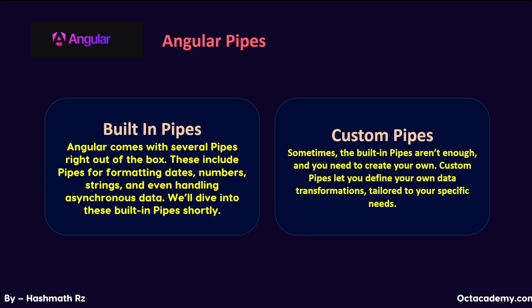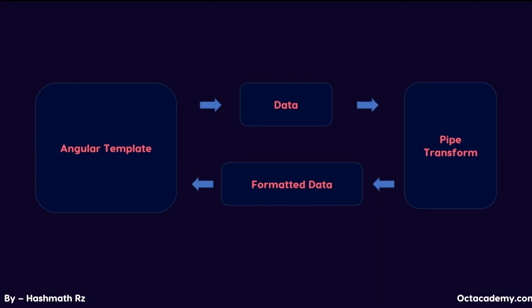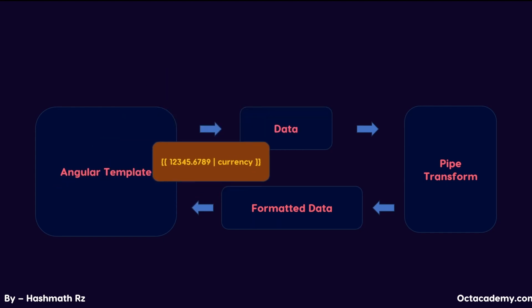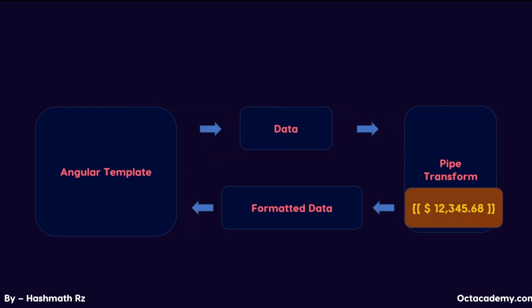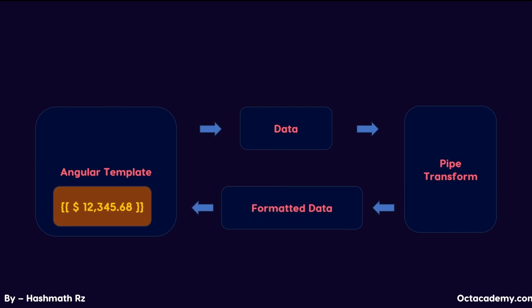Now let's talk briefly about how pipes work in Angular templates. When we apply a pipe to a piece of data, Angular passes that data through the pipe's transform method — that's where all the magic happens. It processes the data and returns the transformed output. For example, if we have a number and want to display it as a currency, the currency pipe takes that number and transforms it into a formatted currency string by adding the currency symbol and comma separators. With one simple line of code in our template, we get a nicely formatted value.